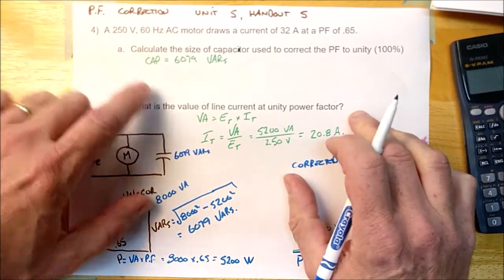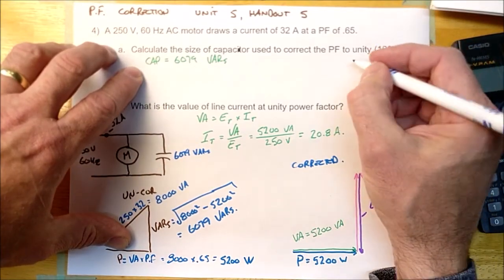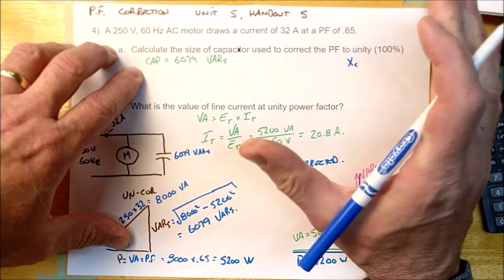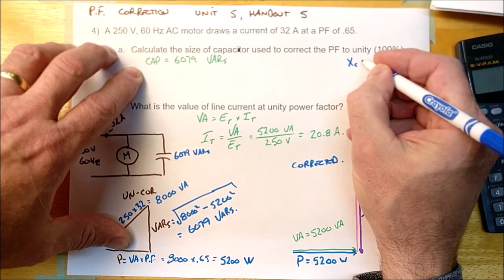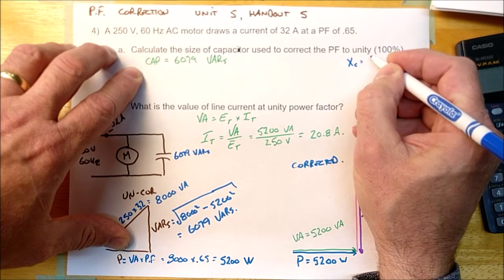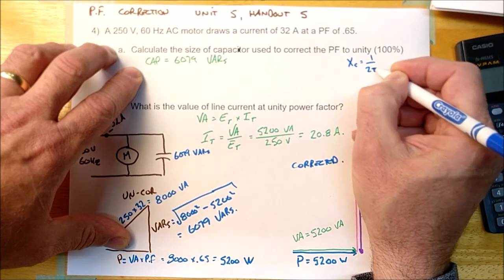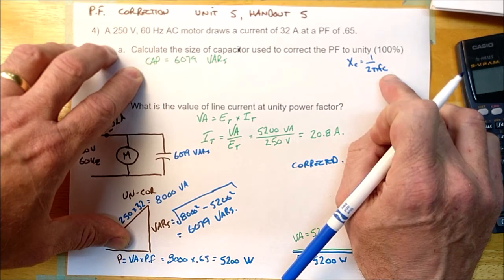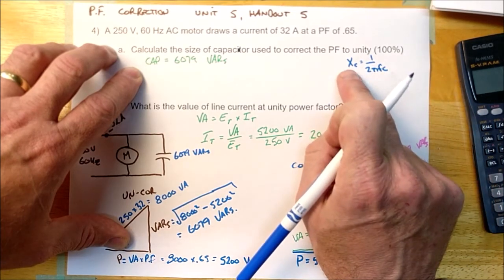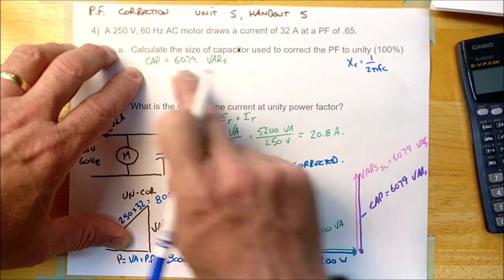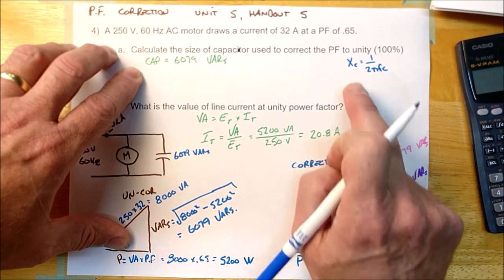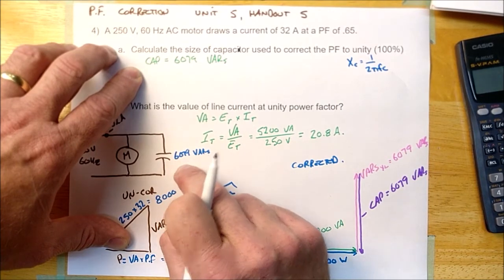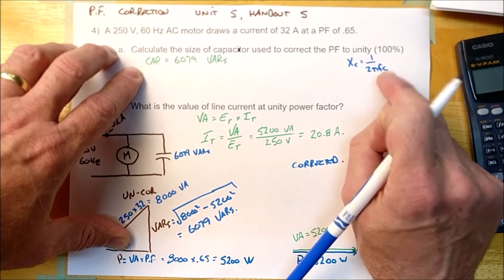So the first thing we have to understand is that this capacitor here is 6079 VARs. Now if you look at the microfarad formula, it's basically this one right here. It's XC. The only formula that I know that could work that has microfarads in it, or farads for that matter, is XC is equal to 1 over 2πFC. And C in this formula is the capacitance in farads. The only problem with this formula is I need to know XC, and I only know VARs. So the first thing I would have to do is calculate how many ohms this capacitor is. And if I can calculate how many ohms this is, then maybe I can calculate how many microfarads it is.